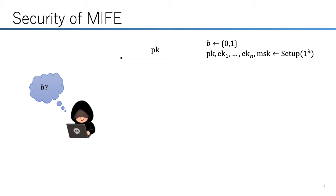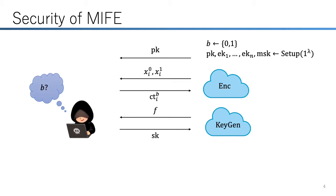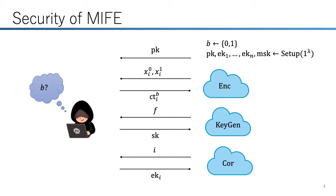The indistinguishability-based security of MIFE is defined by the following game. First, the adversary is given a public key and the challenger chooses a random bit B. Then the adversary can make three queries. The first is the encryption query: on input xi0 and xi1, it replies the encryption of xiB. The second is the key generation query: on input function f, it replies a secret key for f. The last is the corruption query: on input i, it replies EK_i. The adversary is prohibited from making queries that allow it to trivially learn the bit B. Security requires that an efficient adversary cannot distinguish the case where B equals 0 from B equals 1.